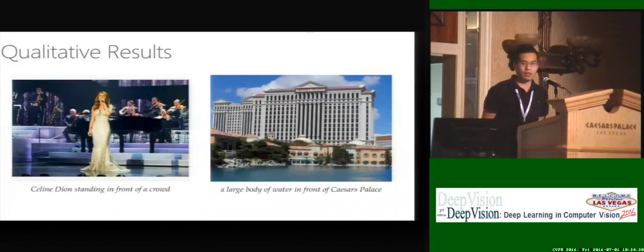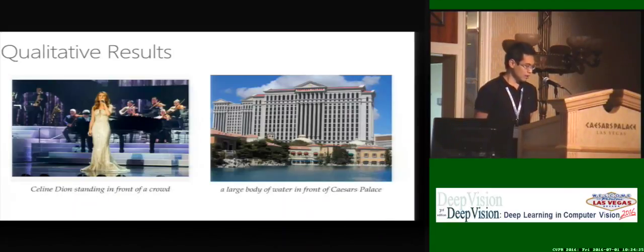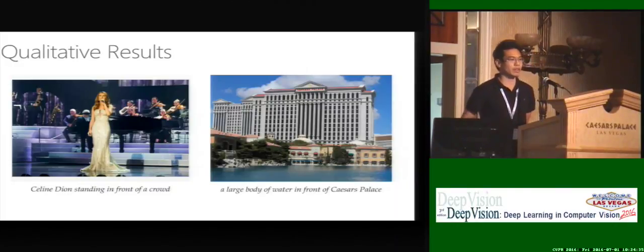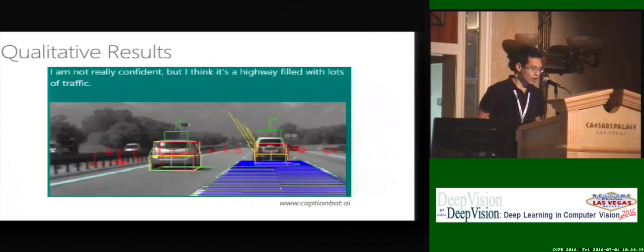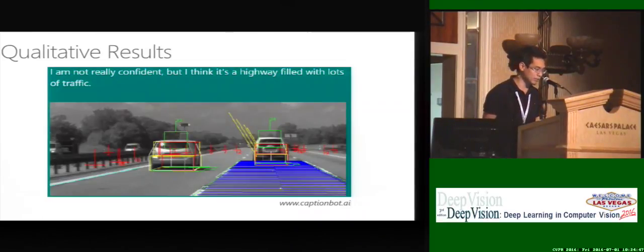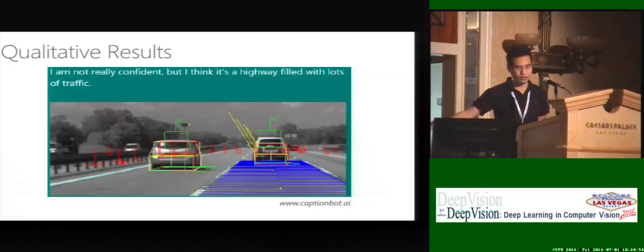Here are some example captions generated by our system. You can see that it can detect celebrities and knows how to fuse celebrity or landmark information into the captions to make them much more interesting. Here's another example, which is a screenshot from CaptionBot.ai, an application built on top of our image captioning system. Because of the uncertainty information, it can say 'I am not really confident, but such and such.'